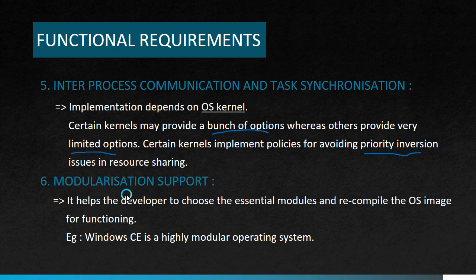Next we move on to modularization support. Most operating systems provide a bunch of features, but at times not all features may be necessary for an embedded product. It is very useful if the OS supports modularization, wherein the developer can choose the essential modules and recompile the OS image for functioning based on the needs of the embedded system. Windows CE is a highly modular operating system.